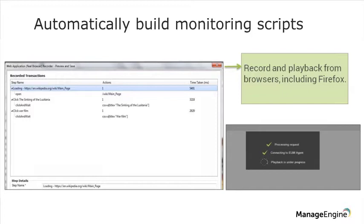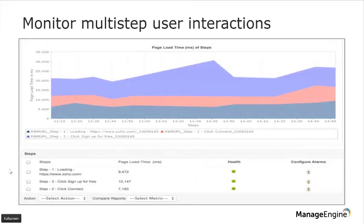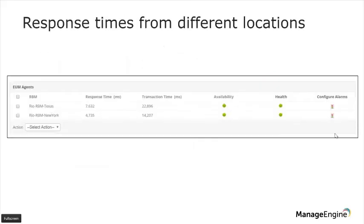What data does real browser monitoring provide? The different steps you take are shown with a graphical representation of the load times of each step — including the time spent on a particular page, the time taken to load it, and the health and availability status of that page. We can also collect the response time: this is the summarized version of the response and transaction times that the Texas and New York agents have collected and sent to the parent machine.